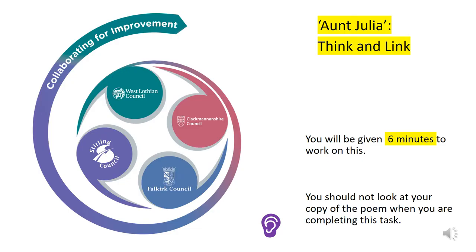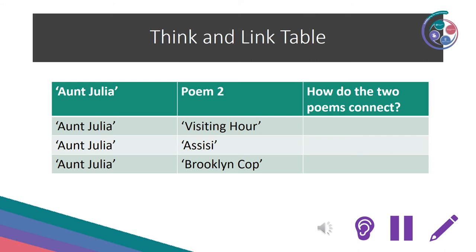For our third retrieval task, we're going to do a think and link task — you should take around six minutes to do this without looking at your copy of the poem. You can see a table here. We're going to think about the connections between Aunt Julia and one of the other poems we've been studying. Draw this table into your jotters or on your computer, and think about how the two poems connect — make some notes before you move on to the next one.